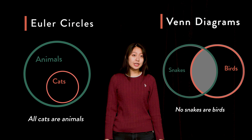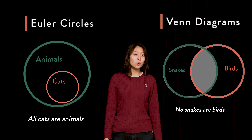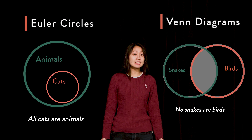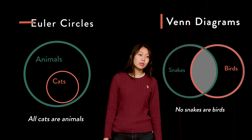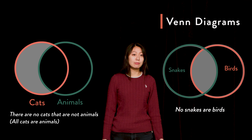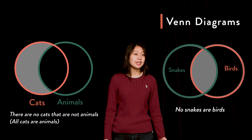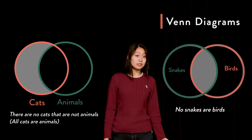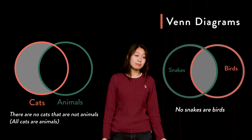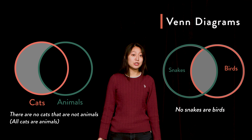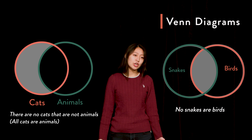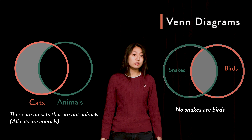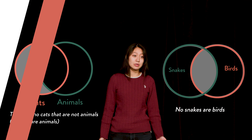In Venn diagrams, we look to shading to understand the propositions. When something is shaded out, you can think of it as being crossed out — the shading signifies that nothing belongs to the category in question. On the left, the region labeled 'cat but not animal' is shaded out, meaning there are no cats that are not animals, which is equivalent to the Universal Affirmative 'all cats are animals.' On the right, the region labeled 'snake and bird' is shaded out, representing the Universal Negative 'no snakes are birds,' meaning there is no snake that is a bird.